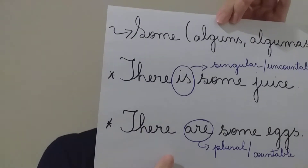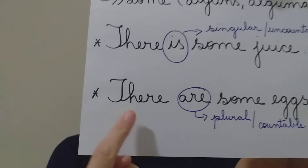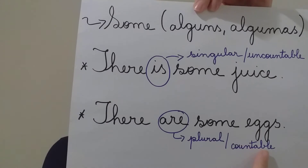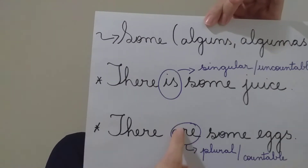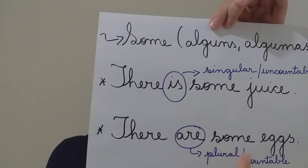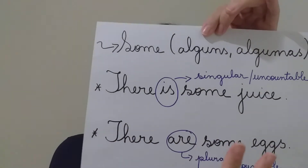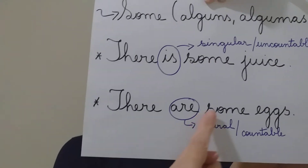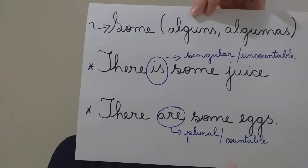There are. There are some eggs. When we talk about 'there are' — plural, countable. O verbo to be 'are' está no plural e nós conseguimos contar. There are some eggs — one, two, three, four, ok? There are some eggs — plural and countable.